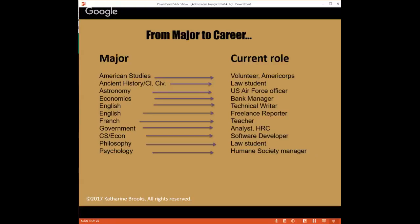This is a chart that I made that's based on a compilation of students that I've worked with over the years at several different universities and colleges. This chart shows what they started with in terms of a major and then where they ended up. We've got an American Studies major who's a volunteer for AmeriCorps, an American History Cultural Civilization major who's a law student, an Economics major who's a bank manager, English majors who are technical writers and freelance reporters, a government major who's an analyst for the Human Rights Commission, a philosophy major who's a law student, and a psych major who works in the Humane Society. This is really nice and it shows you how your major can come in very handy. But you know what? I've played a little game with you here. It's all wrong.